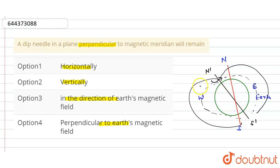And so we can say that the dip needle in a plane perpendicular to the magnetic meridian will remain vertical. So this will be like a vertical. As the horizontal component of the Earth's field is not affected as the rotation of needle lies in the direction of horizontal component of magnetic field. So the correct option is option second is the right answer.